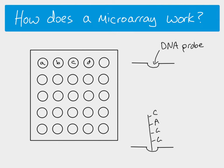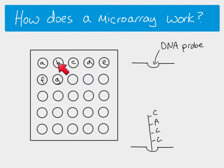The scientists and laboratories that make these microarrays know that the probe in a particular well corresponds to a gene or coding region, which we'll call gene A. In another well, there's a different DNA probe with a different base sequence corresponding to gene B, and so on. The company that makes the microarray knows which gene is represented by the probe in each well.